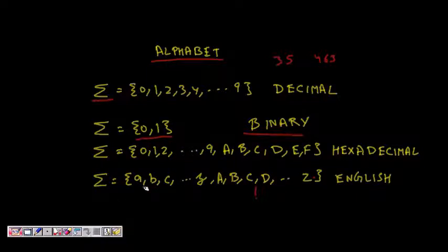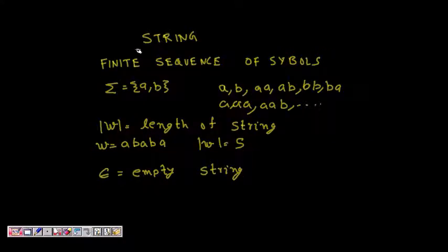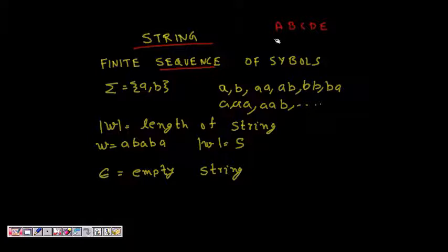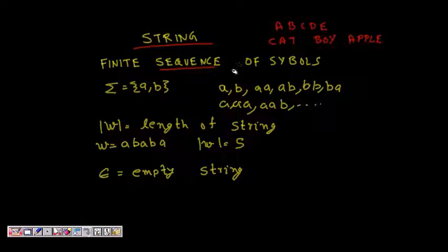Now let's look at strings. Just like in English we learn alphabets and then form words from them — like cat, boy, apple — similarly in automata theory, strings are formed over the alphabet. A string is a finite sequence of symbols.